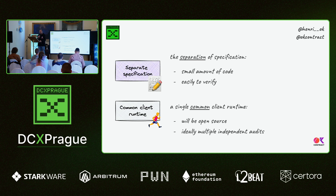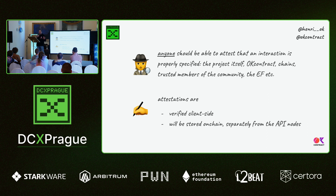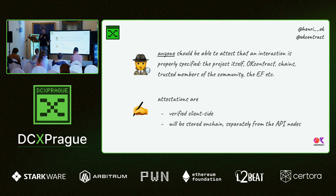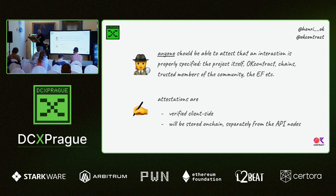For instance, now we're working with Optimism and will probably try to audit on their side, and several other people will be able to audit that common runtime. Another element of trust: since we have this shorter description of interactions, anyone should be able to attest that it's correct. The community — the project itself, maybe us, chains, trusted members of the community, or the Ethereum Foundation — can create attestations that, okay, this interaction to add liquidity on that project is valid, the computation is valid. These signatures should be stored on-chain, completely separate from the rest of the API nodes which provide the definition.